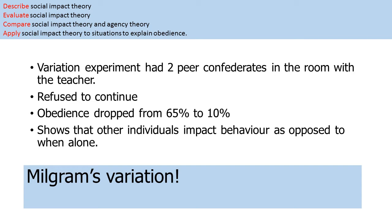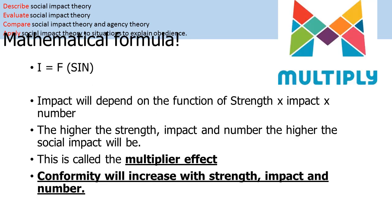Milgram's variation experiment supports this. Milgram used two peer confederates — called rebellious stooges — who refused to continue the experiment. When there were two other people in the room refusing to take part, obedience levels dropped from 65% of participants going to 450 volts down to just 10%, supporting social impact theory's claim that we are strongly influenced by other people around us. The formula remains: F equals the function of strength times immediacy times number, and the higher those values, the greater the conformity and obedience.